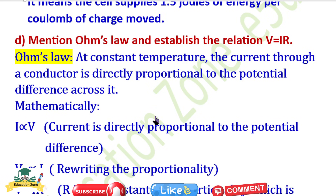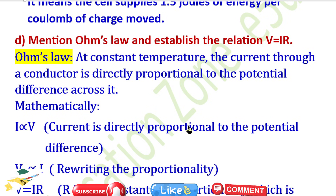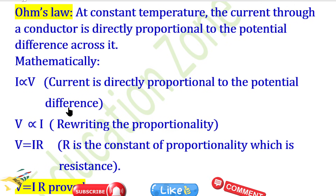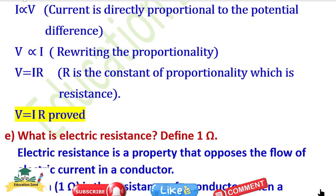Question D: Mention Ohm's law and establish the relationship V = IR. Ohm's law states: at constant temperature, the current through a conductor is directly proportional to the potential difference across it. Current is directly proportional to potential difference: I ∝ V. Rewriting the proportionality, I = V/R, where R is the constant of proportionality which is the resistance. This gives V = IR.